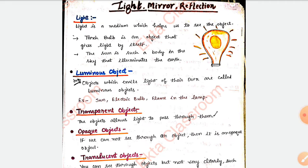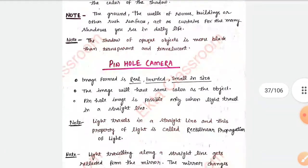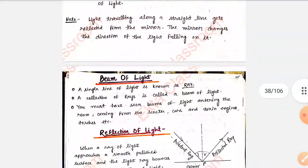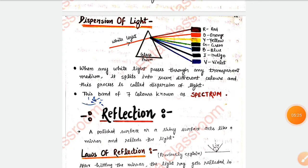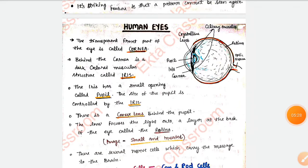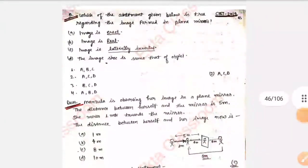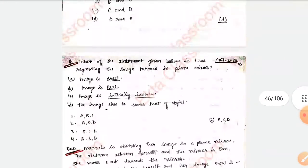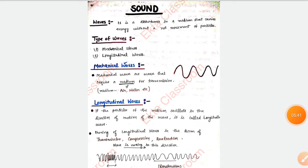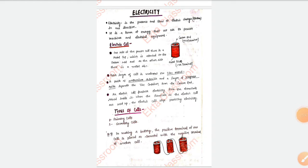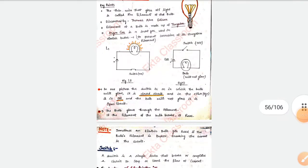If you want to buy these notes, message me on my WhatsApp number which I have given in the description box and in the comment section. You can see this topic is related to human eyes — I have covered this and also given some previous year questions. This question was asked in CTET 2020. This is the first page of Sound, and now moving to the next — this is the first page of the Electricity chapter, which is most important.